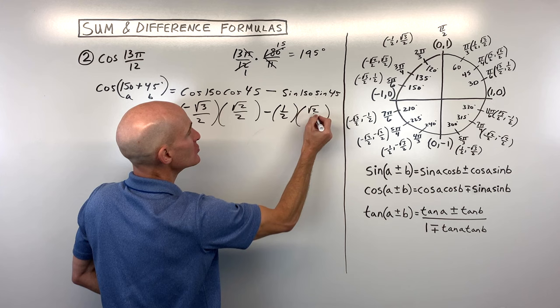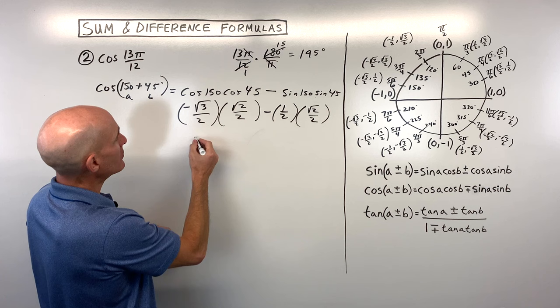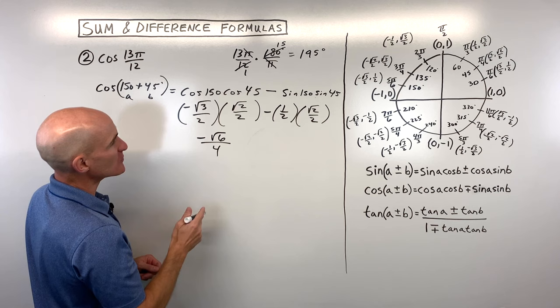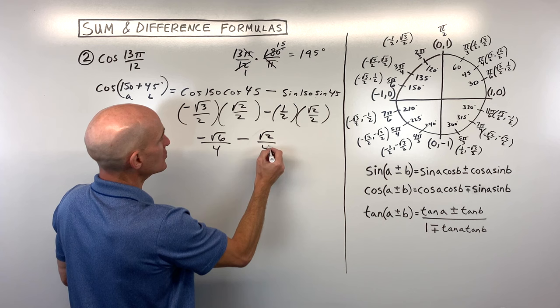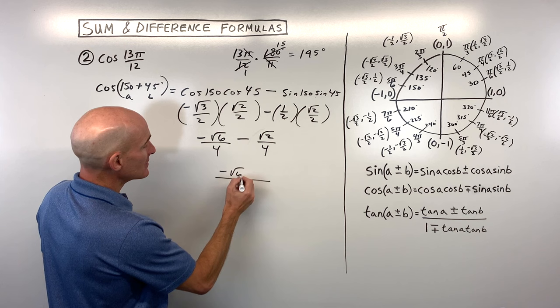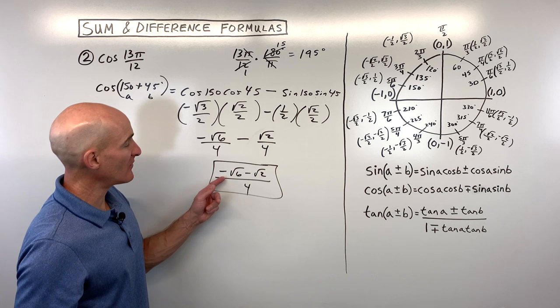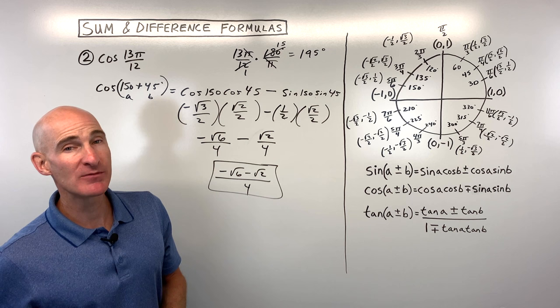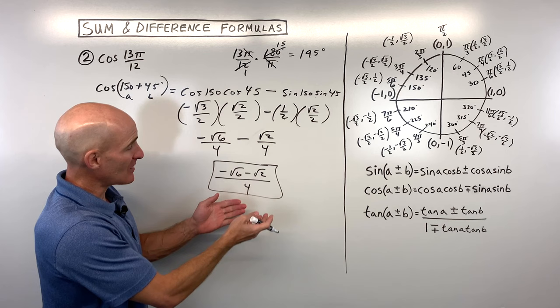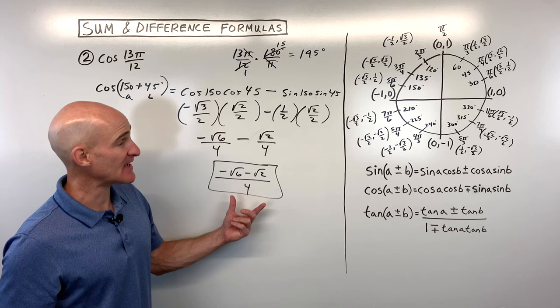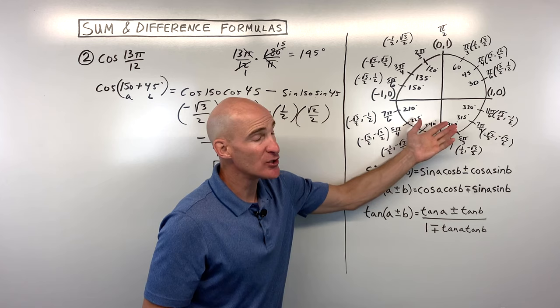Now all we have to do is a little bit of arithmetic. Multiplying the numerators together we get −√6 over 4. For the second term, we get √2 over 4. With a common denominator of 4, we combine into one fraction: (−√6 − √2) / 4. Keep in mind, this is an exact value for the cosine of 13π/12 — an angle we don't know on our unit circle, but can get from adding two angles we do know.